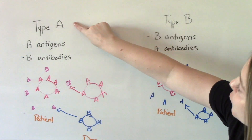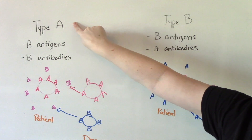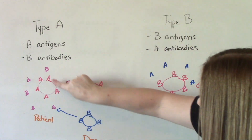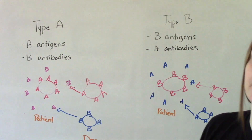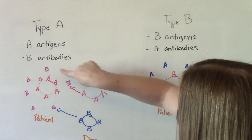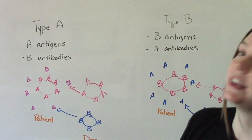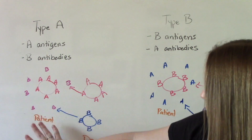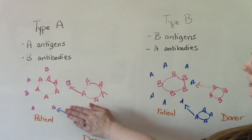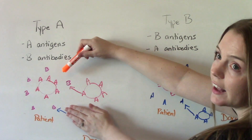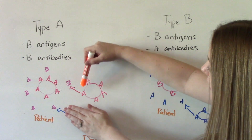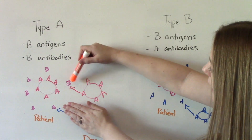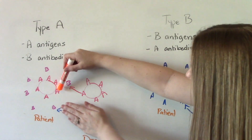For example, if you have type A blood, that means you have A antigens and B antibodies. The antigens are on the surface — they're markers, identifiers — and the B antibodies are floating in the plasma. The antibody's job is to protect the body by recognizing foreign invaders. So if this is our patient's type A blood, and we give type A blood in a transfusion, the B antibodies are not going to recognize the A antigens as foreign — they'll say, I've never seen you before, I'm not going to attack you. The patient is fine.